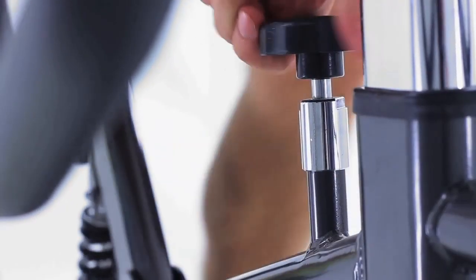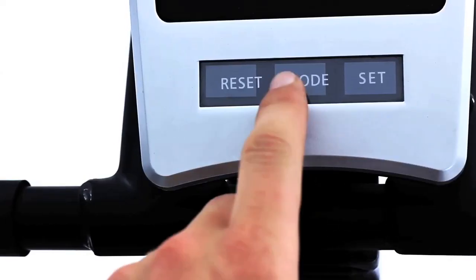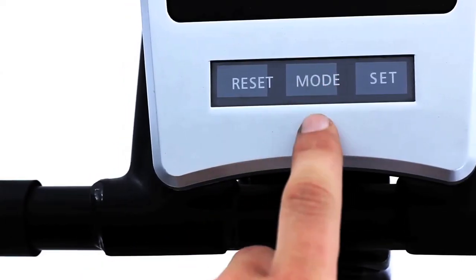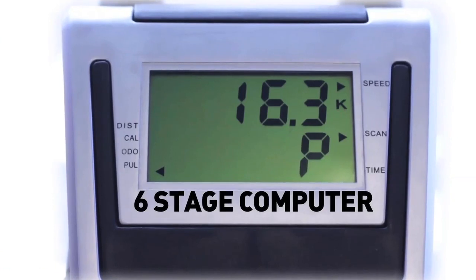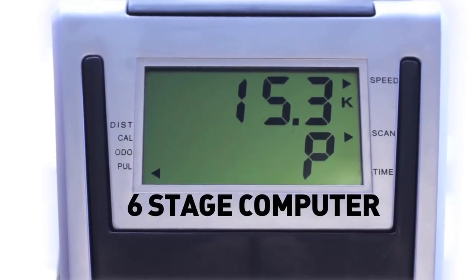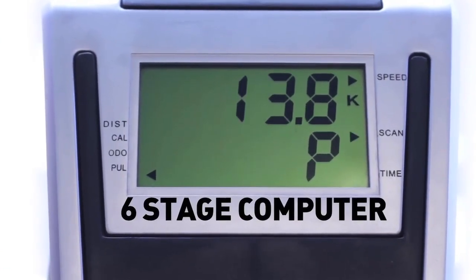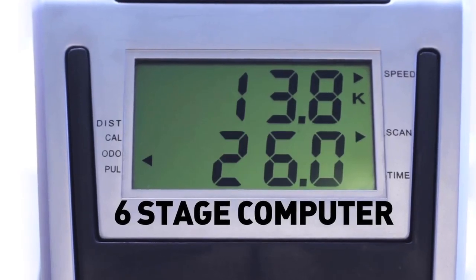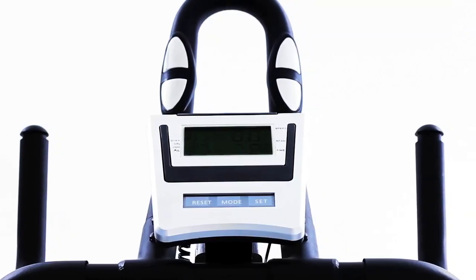Adjust tension by turning the knob to easily find the right resistance at all stages of your ride. The easy-view display shows time, speed, distance, calories, and pulse.